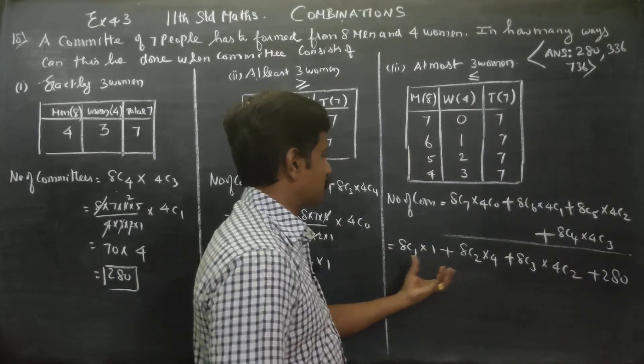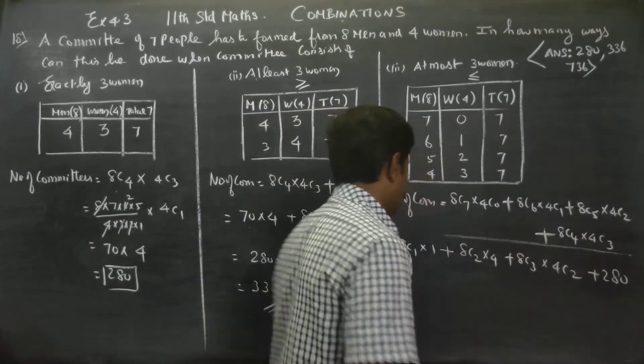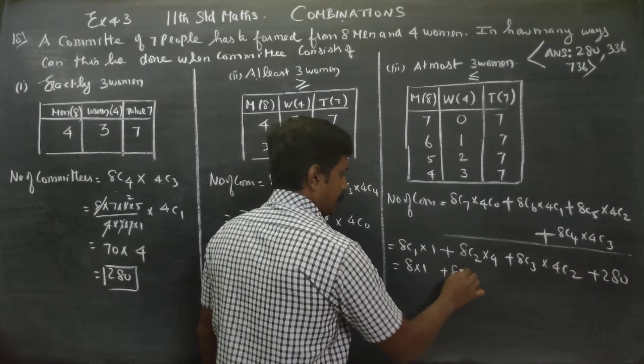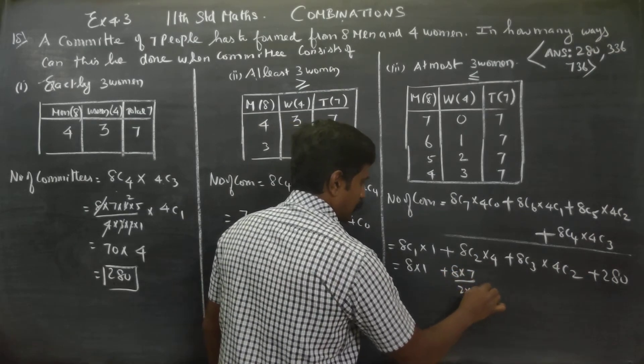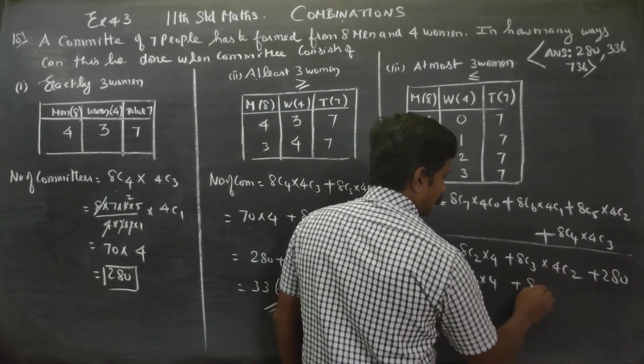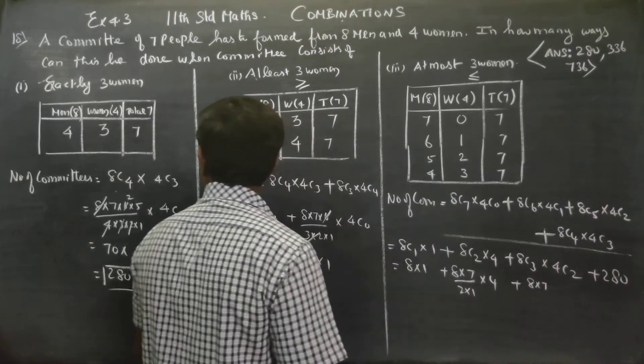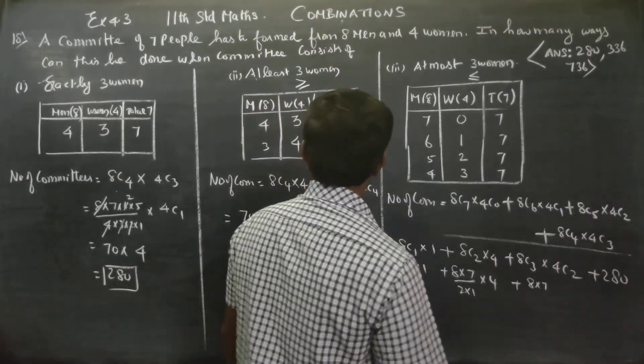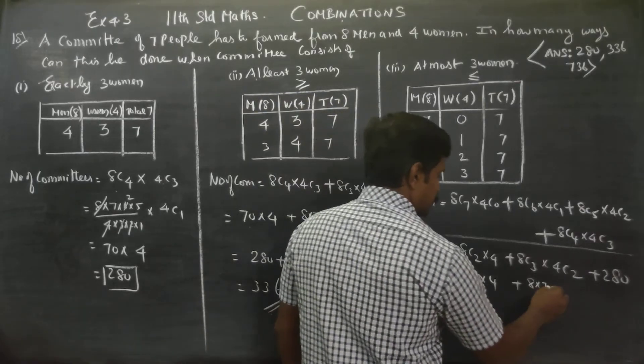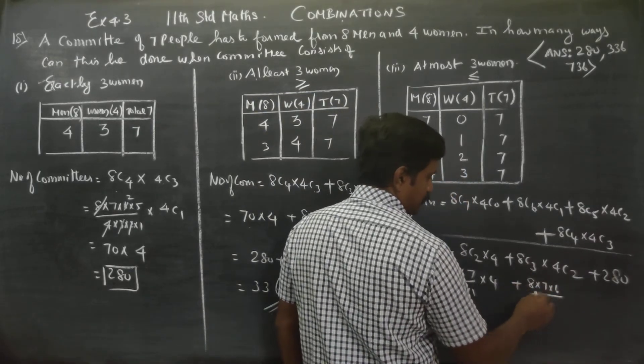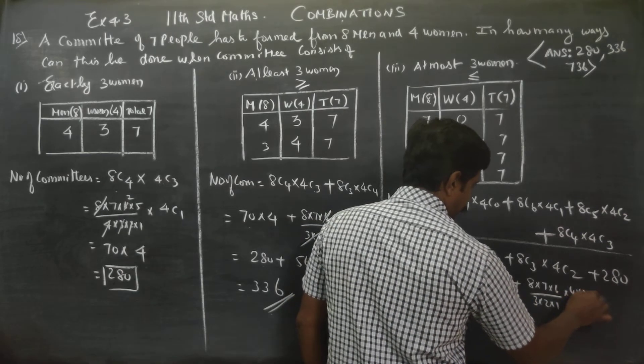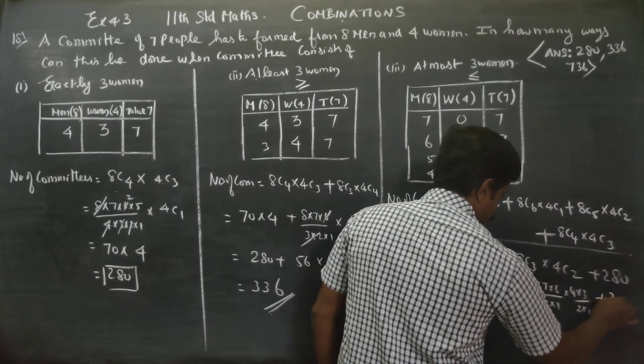8C1 times 1, plus 8C2 times 4. Then 8C3 is 8 times 7 times 6 divided by 3 times 2 times 1, times 4C2 which is 4 times 3 divided by 2 times 1. After canceling, we get 56 times 6, which gives us 336, plus 280.